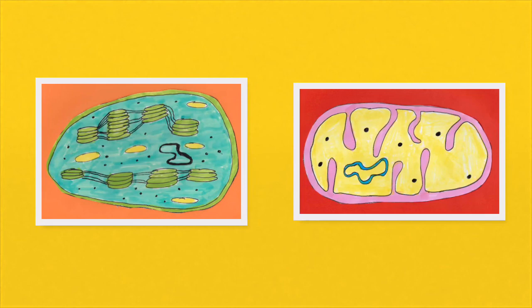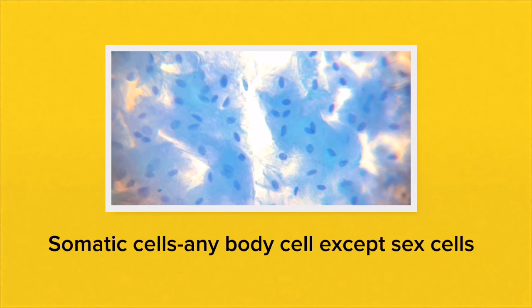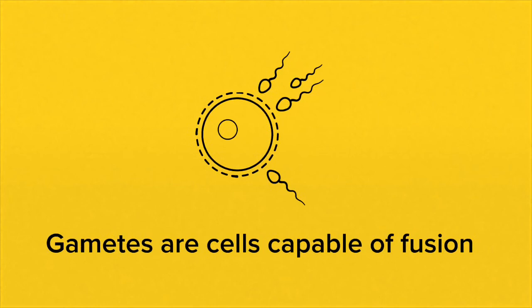It's worth noting that there are two organelles where you would find DNA: the chloroplast in plant cells, and the mitochondria found in both plant and animal cells. Somatic cells are any body cell except sex cells or gametes. Gametes are those cells capable of fusion — for example, egg cells and sperm cells.